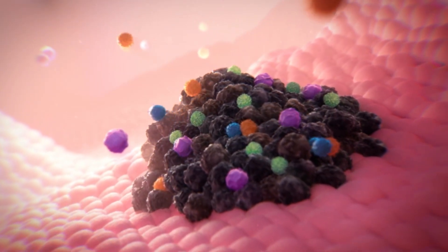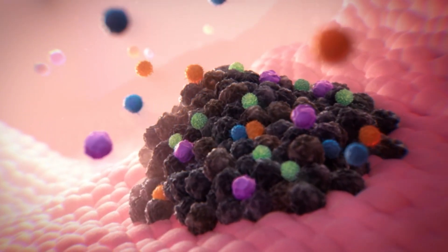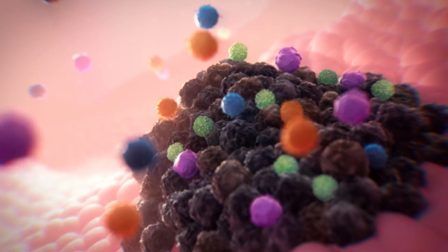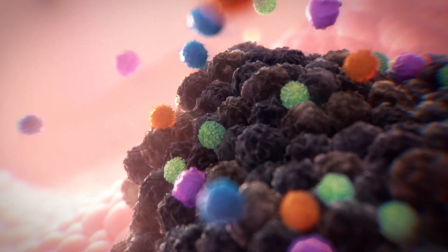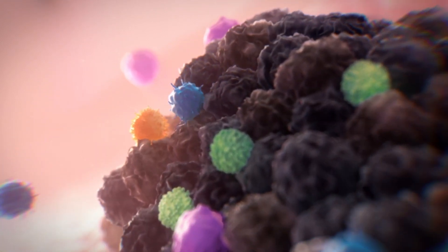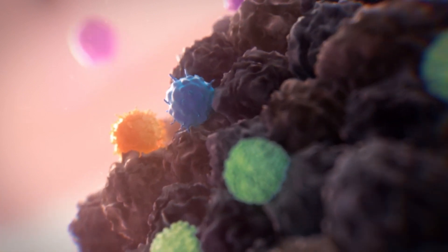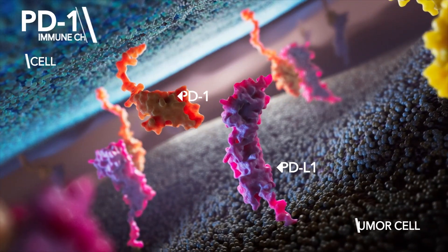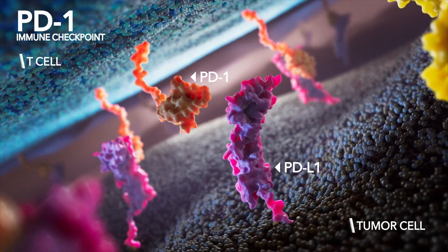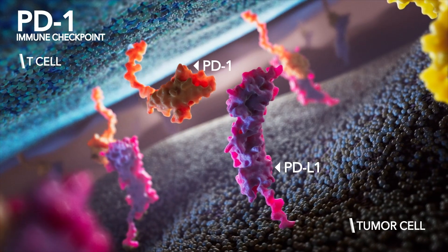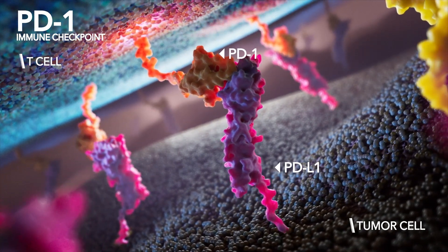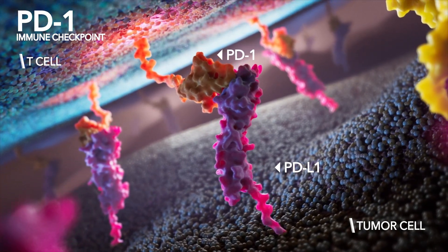Within the tumour microenvironment, cancer cells can influence their surroundings through proteins expressed on their surface to evade host immune responses. One immune response that tumour cells exploit is the well-known PD-1 immune checkpoint to inhibit the adaptive immune response.